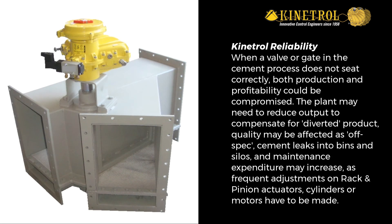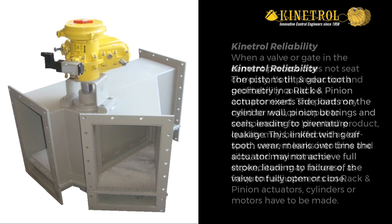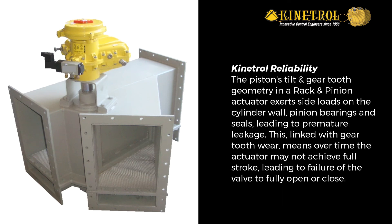Accuracy: when a valve or gate in the cement process does not seat correctly, both production and profitability could be compromised. The plant may need to reduce output to compensate for diverted product; quality may be affected as off-spec cement leaks into bins and silos, and maintenance expenditure may increase as frequent adjustments on rack and pinion actuators, cylinders, or motors have to be made. The piston's tilt and gear-tooth geometry in a rack and pinion actuator exerts side loads on the cylinder wall, pinion bearings, and seals, leading to premature leakage.